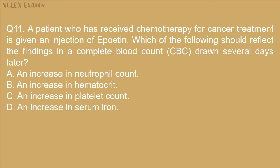Question 11: A patient who has received chemotherapy for cancer treatment is given an injection of epoetin. Which of the following should reflect the findings in a complete blood count (CBC) drawn several days later? A. An increase in neutrophil count. B. An increase in hematocrit. C. An increase in platelet count. D. An increase in serum iron.